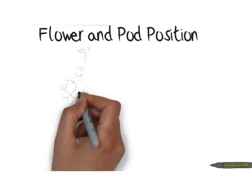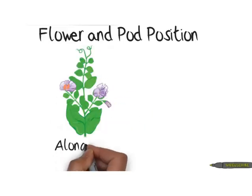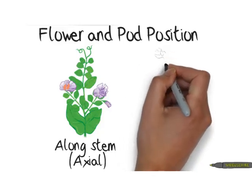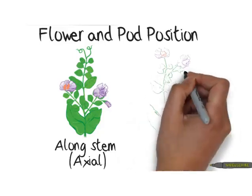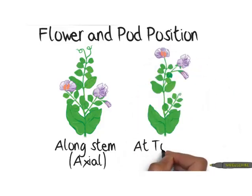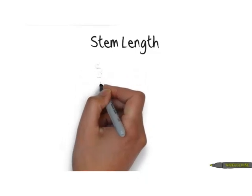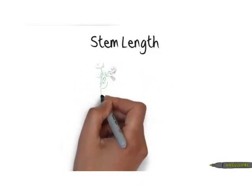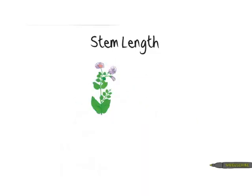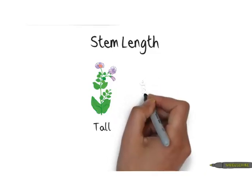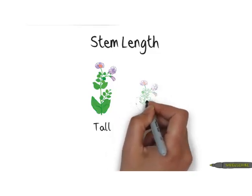Next we're going to look at flower and pod position. The flowers towards the base or along the stem is called axial, while flowers and pods at the top of the stem are called terminal. Finally, stem length is going to be one of our examples — it's very easy to observe. Plants were either tall or had a short stem length, sometimes referred to as dwarf length.